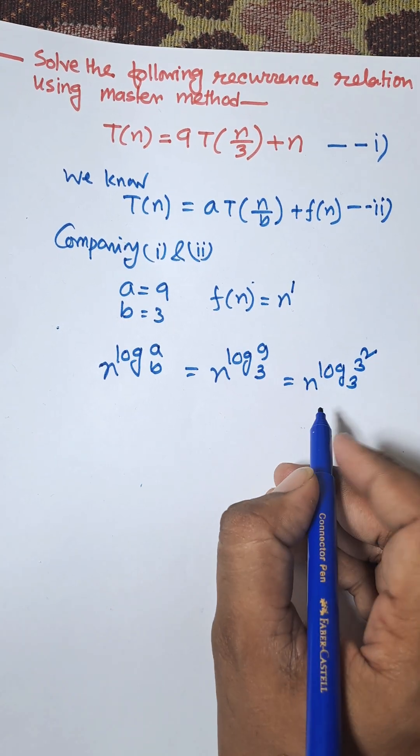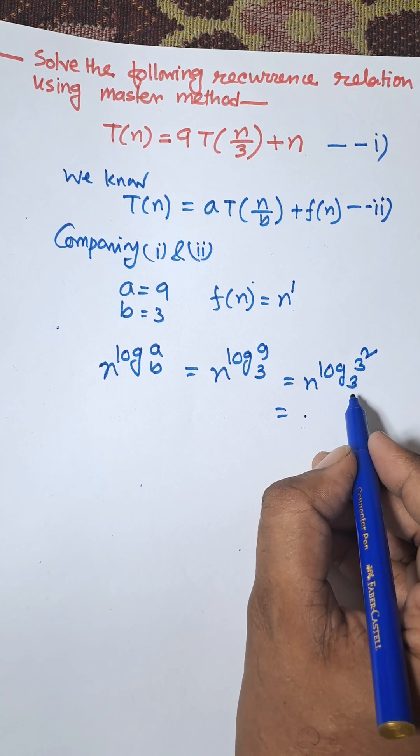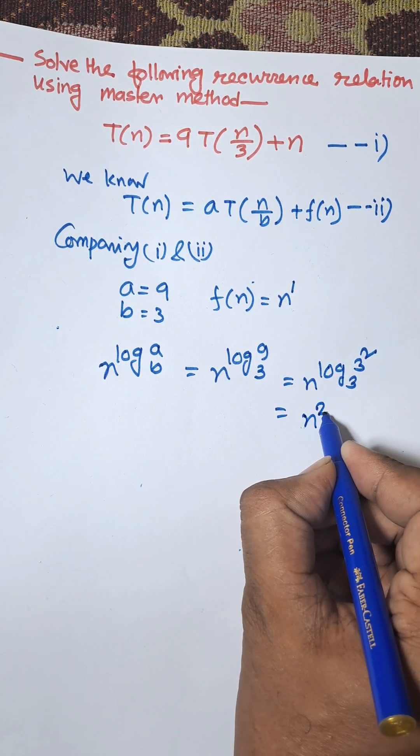That is equal to n to the power log base 3 of 3 squared. And we know that log base 3 of 3 equals 1, that's mean n squared. Log base 3 of 3 that is equal to n squared.